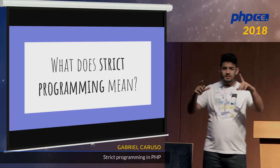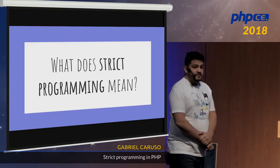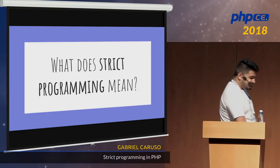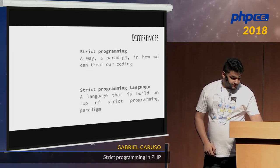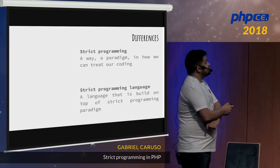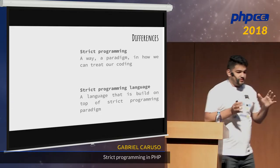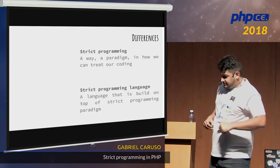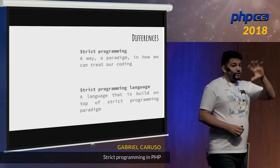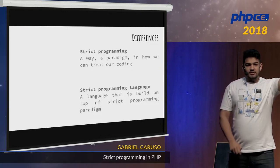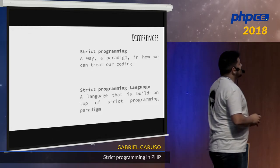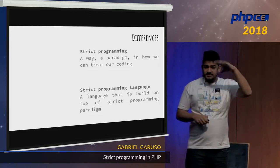Strict programming and strict programming language are two different things. Strict programming is a paradigm — you can code strict in PHP, for example, but PHP itself isn't a strict programming language. Java and C are strict programming languages because you must code strictly — you need to declare types. In Kotlin, for example, you need to open your class instead of declaring it final, so it's the opposite. Strict programming is a paradigm in how we treat our code, and a strict programming language is a language built on top of that paradigm.